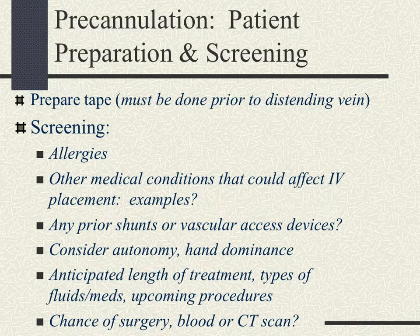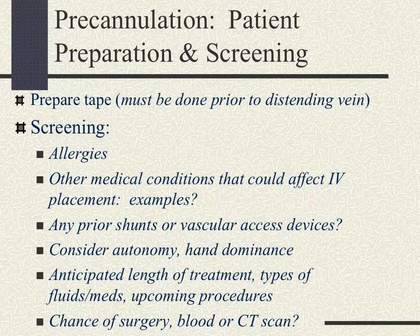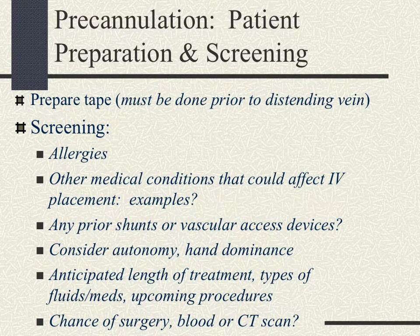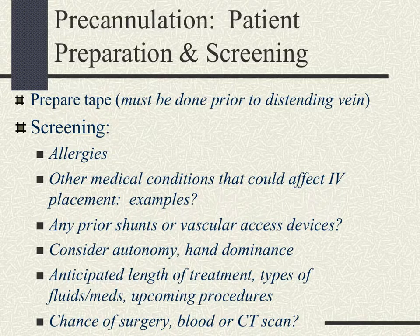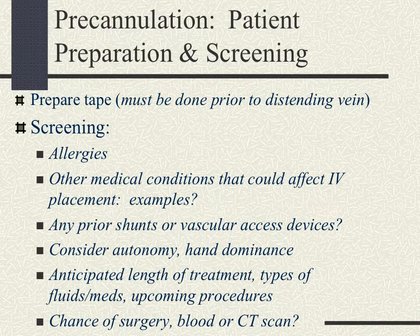Avoid sites that are compromised. Sites distal to previous venipuncture sites may be an issue. The antecubital fossa and the inner wrist can be irritating due to the need to bend the elbow and wrist. Avoid any sclerosed or hardened cord-like veins, sites of infiltration, phlebitic or bruised areas, areas of venous bifurcation due to valvular issues, fragile dorsal veins in older adults, and vessels in extremities with compromised circulation.